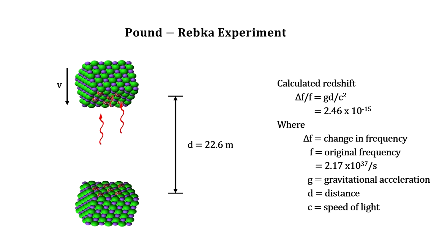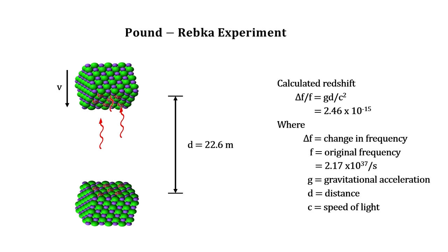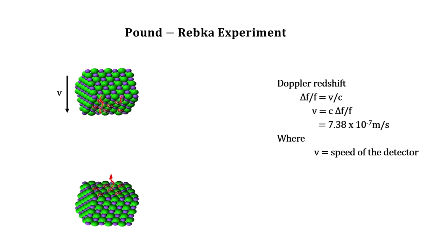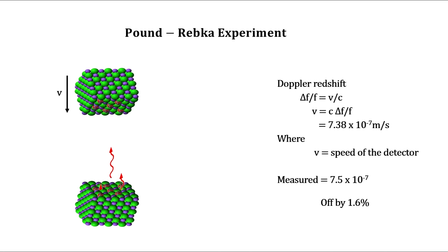They adjusted the detector's velocity down until absorption occurred. We get the amount the frequency changed using the well-understood relativistic Doppler redshift equation, just like the Doppler shift in starlight. These results came in within 1.6% of the value predicted by Einstein's field equations using Schwarzschild's metric.